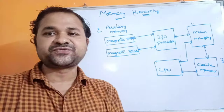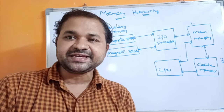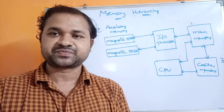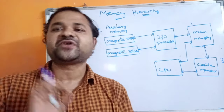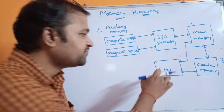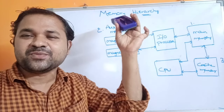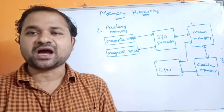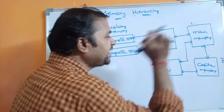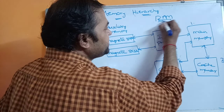Main memory is mainly useful in order to communicate directly with the CPU. CPU stands for Central Processing Unit. CPU is mainly useful in order to execute a program in the computer, so any task in the computer will be performed using the CPU only. But CPU can execute a program only if the program is present in main memory. The best example for main memory is RAM — RAM stands for Random Access Memory.